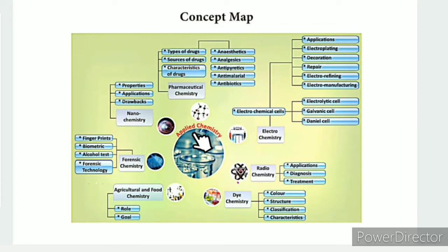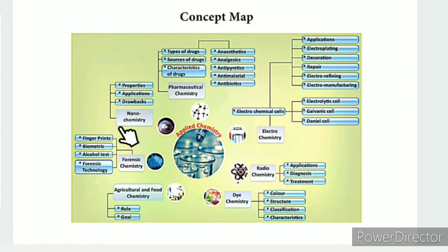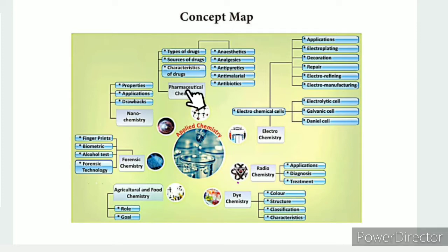Applied chemistry is a part of chemistry connected to day-to-day life. There are 8 topics and 7 fields covered. The fields include: nanochemistry as the first part, pharmaceutical chemistry as the second, electrochemistry as the third, and radiochemistry as the fourth. Now we can see the fifth part - dye chemistry.